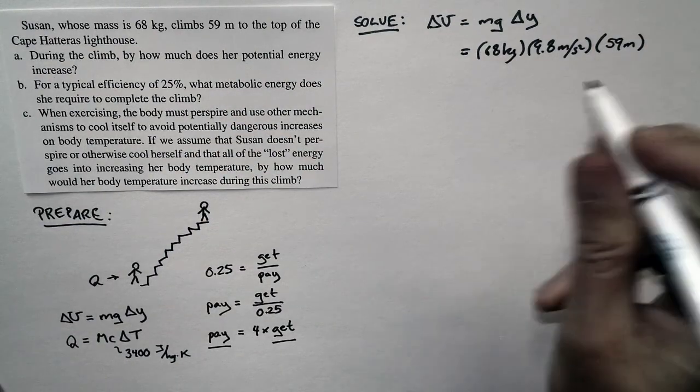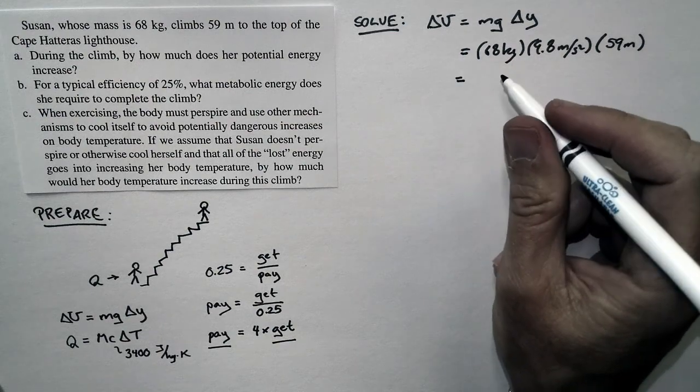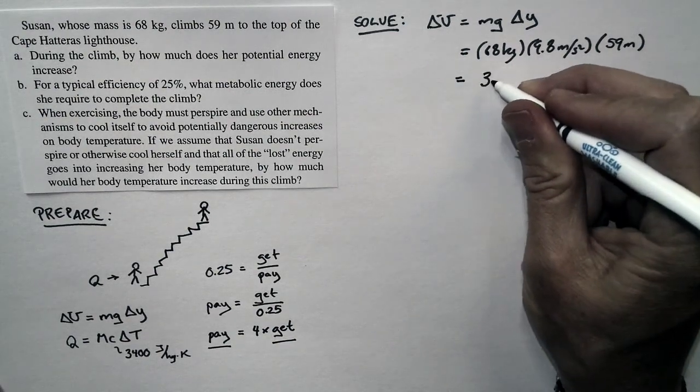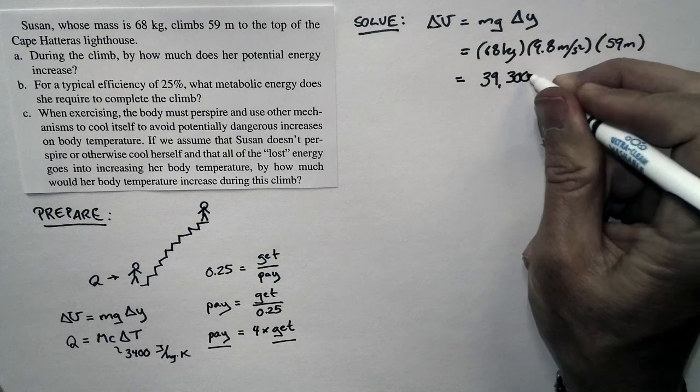That's how high she's climbed. So we have M, we have G, we have delta Y. And so we can figure out that her potential energy is increased by 39,300 joules.